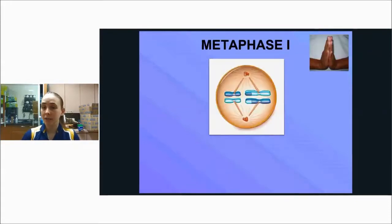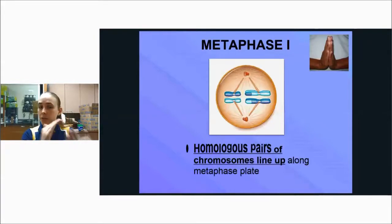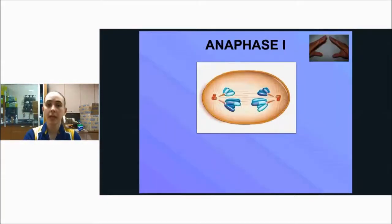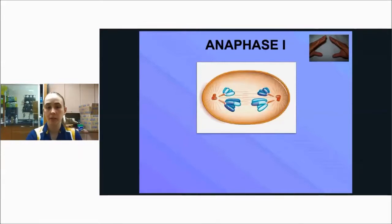In metaphase one, the homologous pairs line up along the metaphase plate. The difference between metaphase in mitosis and metaphase one in meiosis is that the homologous pairs are lining up, so you have two rows of X's instead of a single file line. In anaphase one, the two homologous pairs are pulled apart to opposite poles.